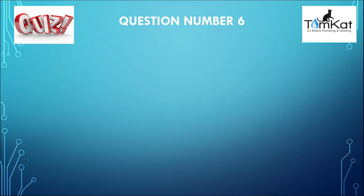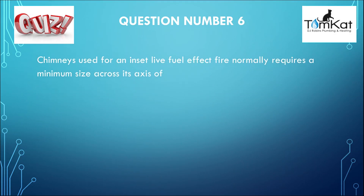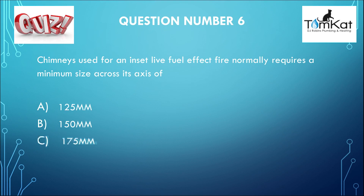Question number six: Chimneys used for an inset live fuel effect fire normally require a minimum size across its axis of A, 125 millimetres; B, 150 millimetres; or finally C, 175 millimetres. That is the end of question number six.